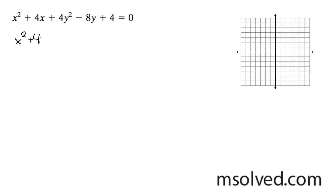How I'm going to do this is I'm going to get x squared plus 4x, and then I'm going to move the 4 over here. And I get 4y squared minus 8y is equal to 0.